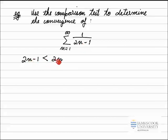My series involves 1 over those terms, so if 2n minus 1 is less than 2n, the reciprocals of those mean I have to switch around the side of the inequality here. So if 2n minus 1 is less than 2n, what that means is that 1 over 2n minus 1 must be larger than 1 over 2n.